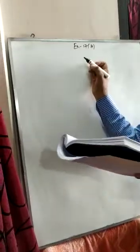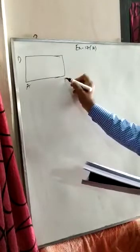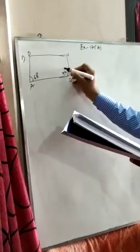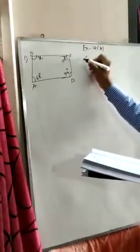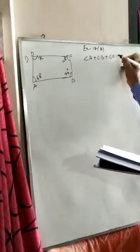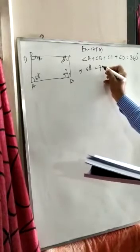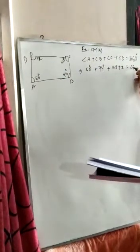Exercise 17A, question number 1: Three angles of a quadrilateral measure 68 degrees, 74 degrees, and 108 degrees respectively. Find the measure of its fourth angle. Let us draw the quadrilateral with angle A = 68°, angle B = 74°, angle C = 108°, and angle D = X. We know angle A + angle B + angle C + angle D = 360 degrees, so 68 + 74 + 108 + X = 360.